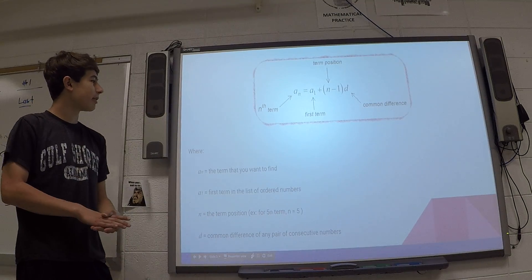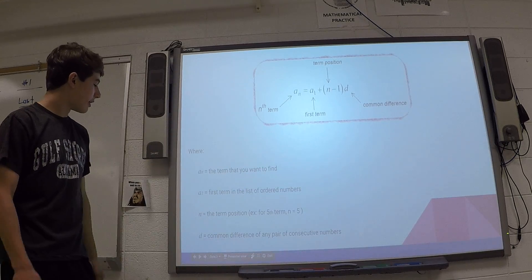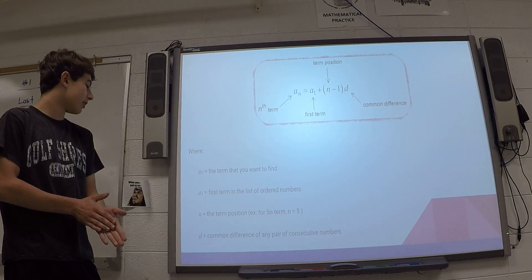So an is a term that you want to find, and a1 is the first term in the list of ordered numbers that you are given.